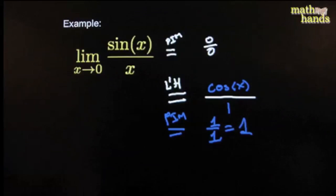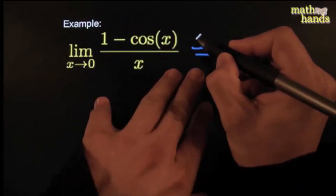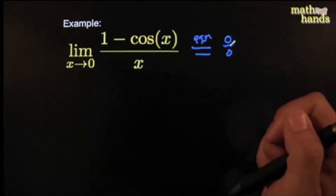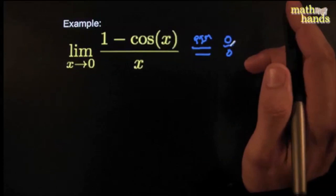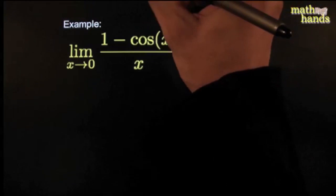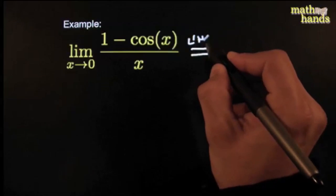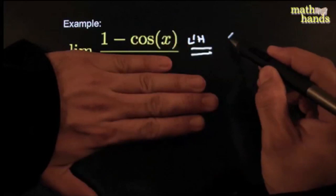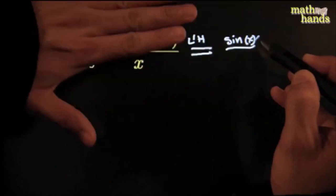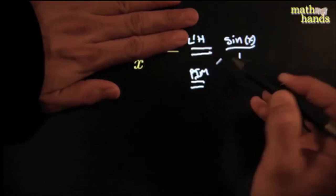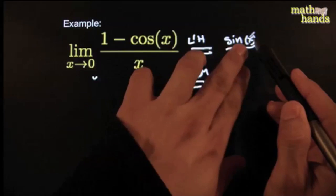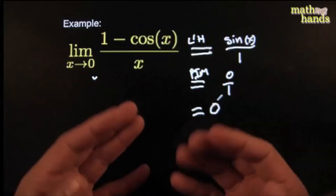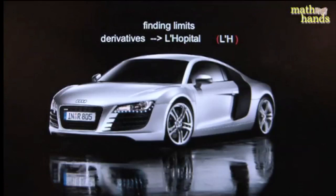Let me do it again. Try the plug-in method: you get zero over zero. Before you'd say 'oh no, indeterminate form.' Today you say 'sweet' — it means L'Hôpital time. The derivative of cos(x) is negative sin(x), but with the negative sign it becomes positive sin(x). The derivative of the bottom is 1. Plug in x→0: sin(0)/1 = 0/1 = 0. Done.